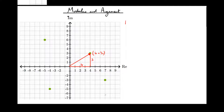Therefore, the modulus of 4 plus 3i — i.e. the distance from the origin — using a simple Pythagoras calculation: square root of 4 squared plus 3 squared equals root of 16 plus 9, which is root 25, which is 5. A simple 3, 4, 5 triangle. So that modulus is 5.